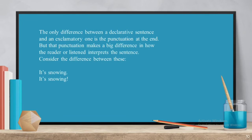The common difference between a declarative sentence and exclamatory sentence is the punctuation at the end. But the punctuation makes a big difference in how a reader or listener interprets a sentence.